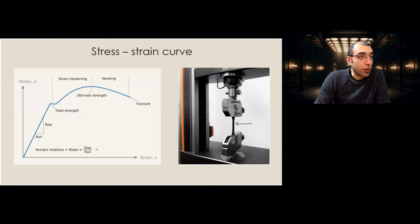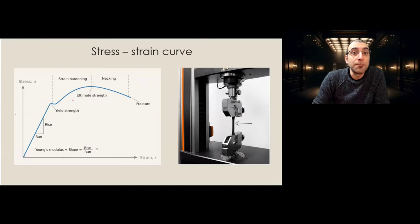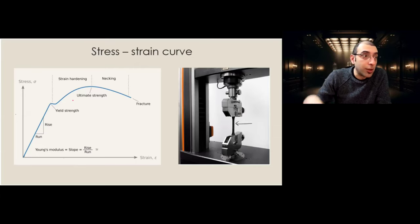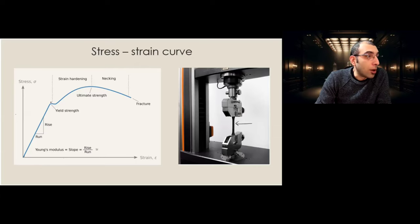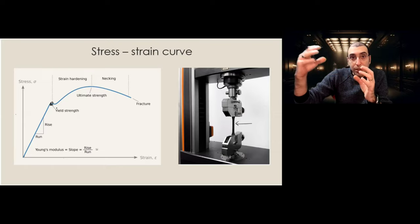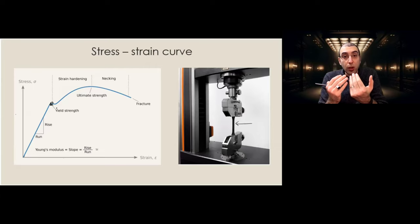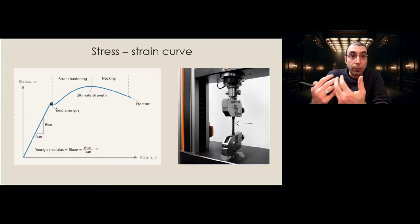As discussed before, when we talk about plastic deformation, we mean that we are beyond the elastic deformation — just at the beginning of plastic deformation, which is permanent deformation. When we are entering the plastic region, we begin with plastic region. Before that, we just have a spring-like behavior. After that, plastic deformation starts.